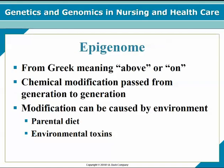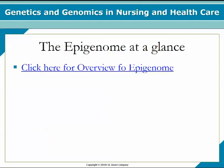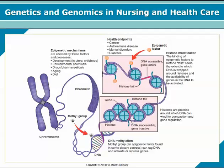The epigenome comes from the Greek meaning 'above or on.' It is a chemical modification passed from generation to generation. The modification can be caused by environmental factors such as parental diet or environmental toxins. Epigenomes are flexible and react to outside forces. The epigenome includes biochemical factors that alter gene expression: methylation, histone modification, and microRNAs. These are the components of the epigenome — the mechanisms of epigenetics.